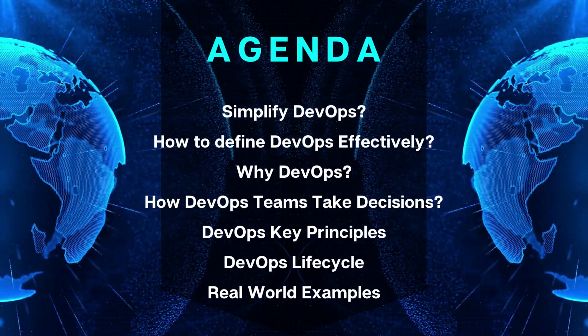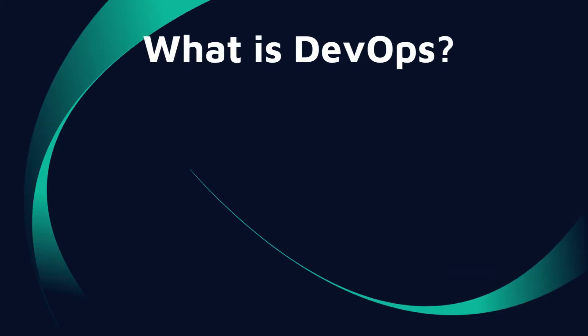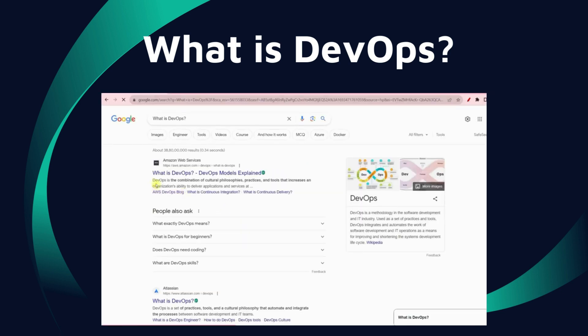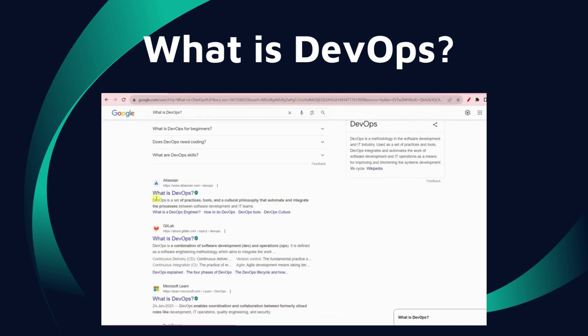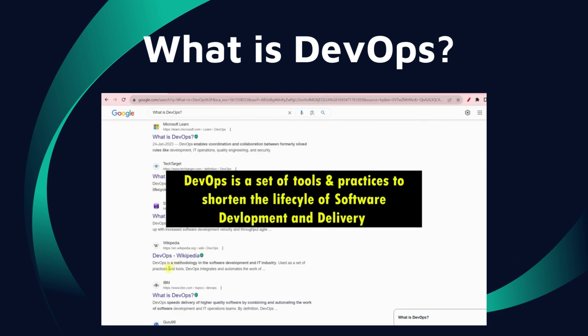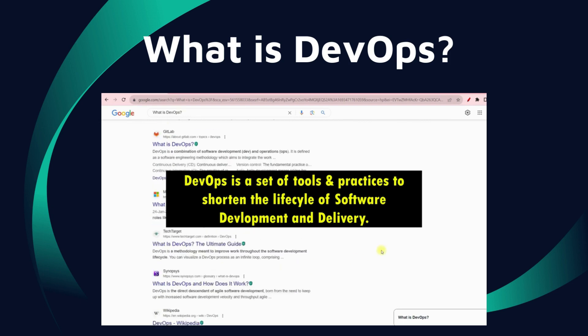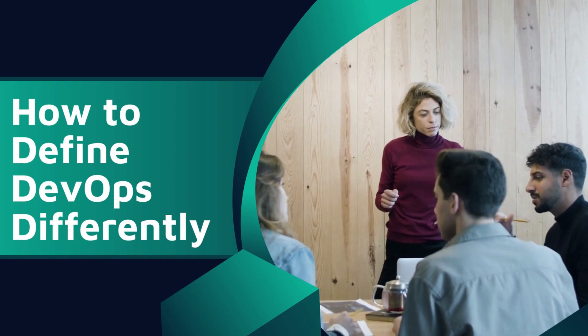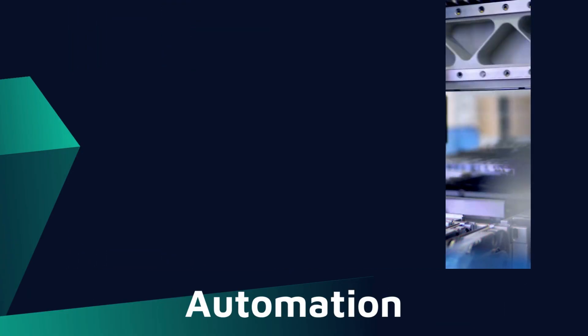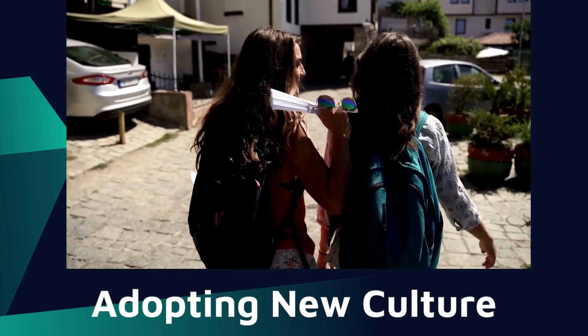Without wasting time, let's get started. Let's define what DevOps is. If you type 'what is DevOps' on Google, you will see multiple sites defining the term, but there is one thing common in all the definitions: DevOps is a set of tools and practices which helps shorten the lifecycle of software development. That's the generic definition, but I'm going to redefine it: DevOps is all about collaboration, communication, continuous integration, automation, and adopting a new culture. These are the buzzwords that actually define DevOps, and we can use them anywhere — in interviews, conferences, or meetings.